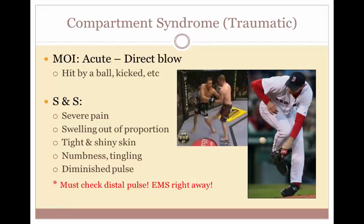If symptoms of compartment syndrome develop, remove or loosen any constricting bandages. If you have a cast, contact your doctor immediately. Signs and symptoms of traumatic or acute compartment syndrome include severe pain, swelling out of proportion, tight or shiny skin, numbness and tingling, and a diminished distal pulse. You should check the patient's distal pulse and activate EMS immediately, as this is a medical emergency.